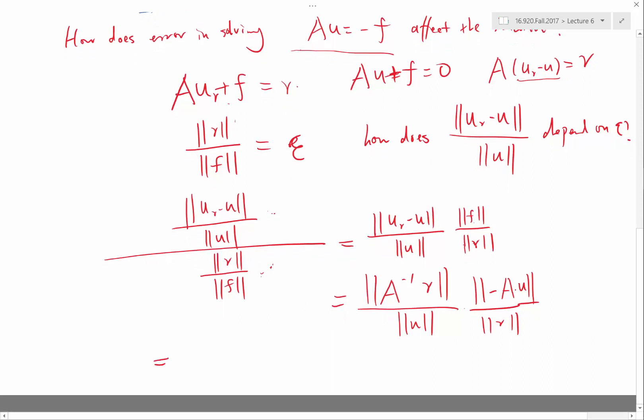So the two ratios are like this. Both ratios are the ratio between either A or A inverse applied on a vector divided by the norm of the vector itself. Because we are taking the norm, it doesn't matter if it's minus or plus. So we are just flipping these two.